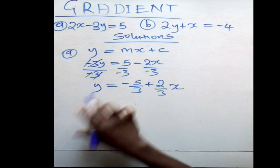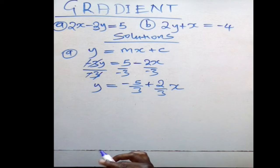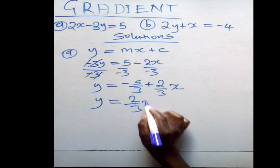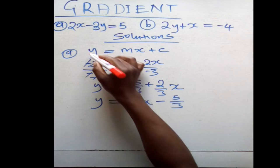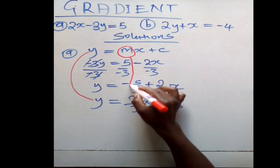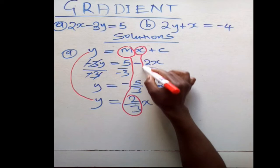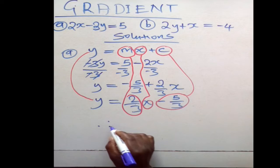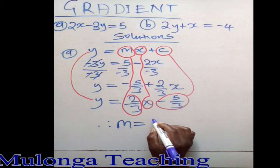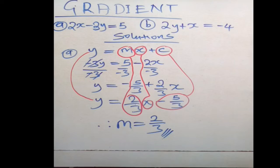At this point we have made y the subject of the formula. The equation is y = (2/3)x - 5/3, which corresponds to y = mx + c. The m here is 2/3, so therefore m = 2/3. This is how we obtain the gradient from a linear equation.